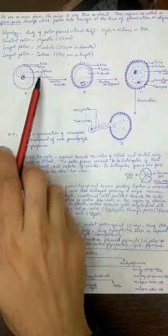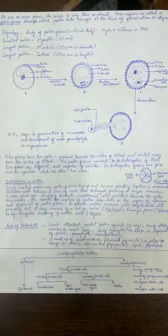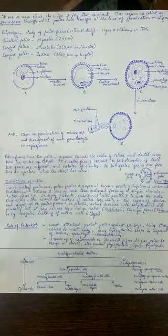The microspore will have an exine, intine, cytoplasm and the nucleus. This nucleus is haploid, please remember.